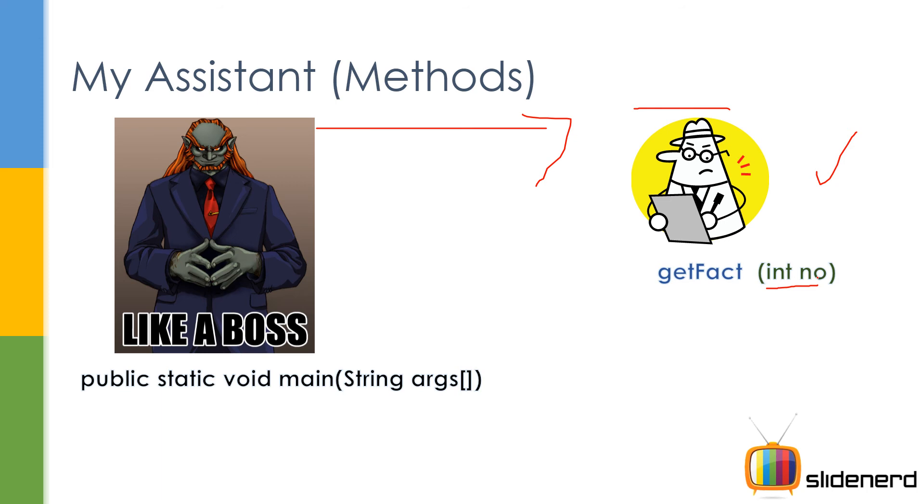Now the assistant is going to calculate the factorial somehow. The boss is not worried or concerned about how he's going to do that. The boss just wants the factorial work done. He doesn't want any delays, he just wants the factorial.